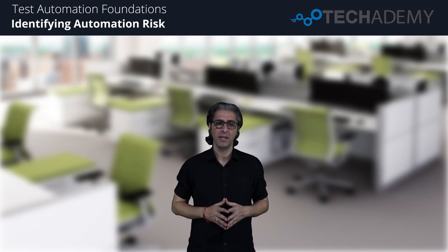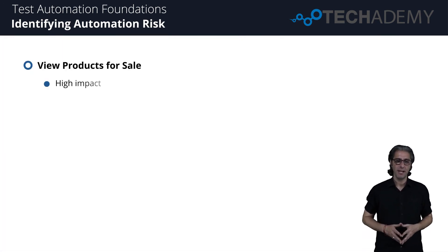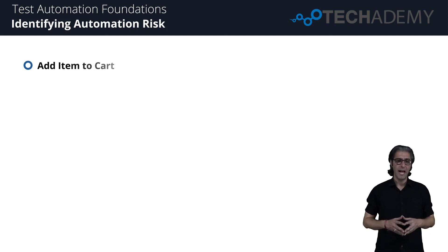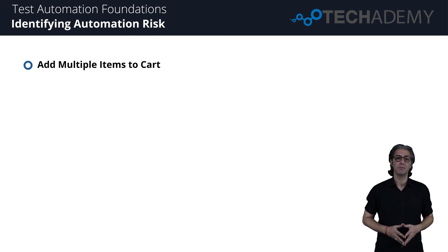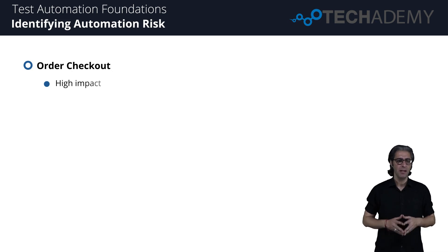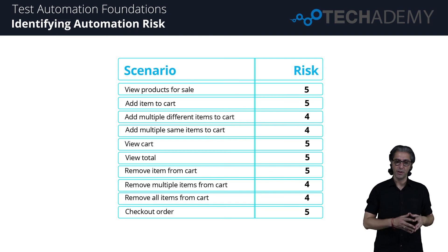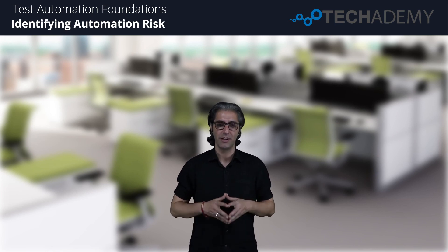Hello and welcome back. In this session we will assign a risk score ranging from 1 to 5 to each scenario. Risk is evaluated on two factors: the effect of the feature if broken and the probability of use by customers. Viewing products for sale: high impact, high probability of use — scores 5. Adding an item to cart: high impact, high probability of use — scores 5. Adding multiple items to cart: high impact, likely used often — scores 4. Order checkout: high impact, certainly high probability of use — scores 5. Risk enables teams to think about how often a feature will be used and what happens if it breaks.